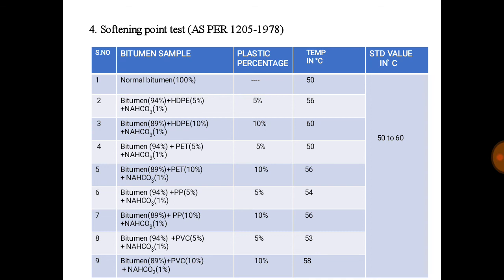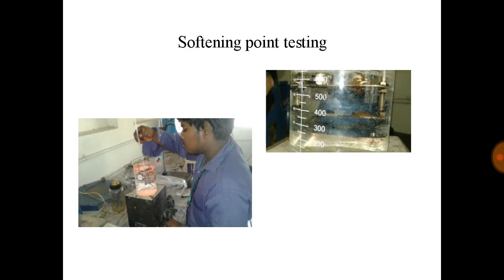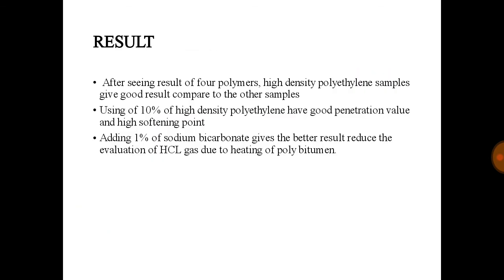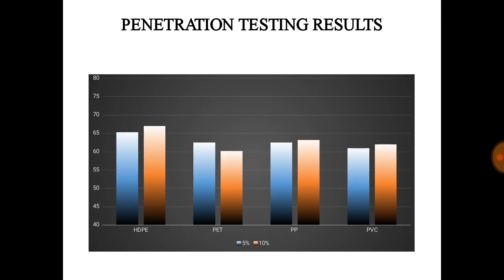Softening point test table and softening point testing images. After testing all four polymers, STP at 10% gives the best result. Adding 1% sodium bicarbonate better reduces the overall harmful gas from heating of poly-bitumen.